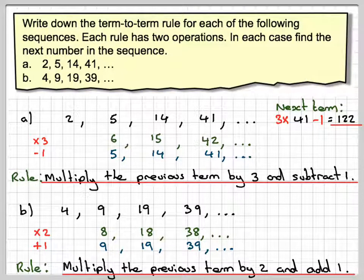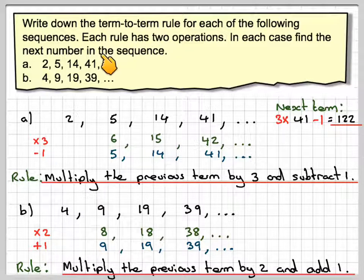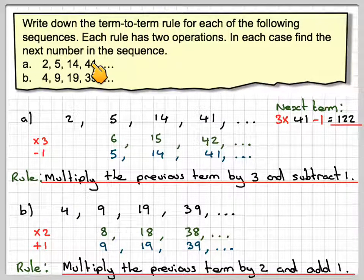So notice this is only finding the term-to-term rule. So in order to use this, you do need to know the previous term. It's been a video to show you how to find term-to-term rules where the rule has two operations, and then using that to find the next term in the sequence. I hope you've understood, and I thank you very much for watching.